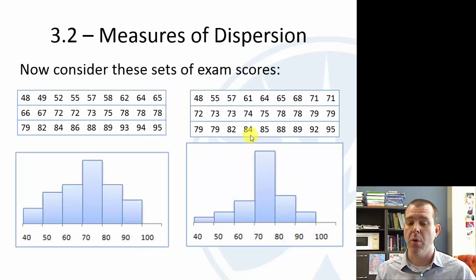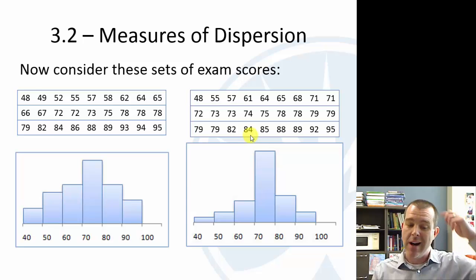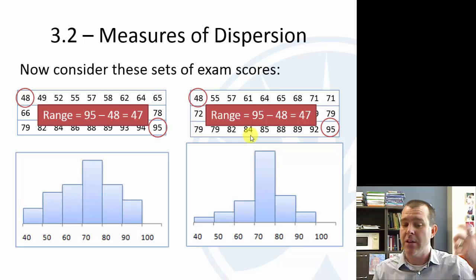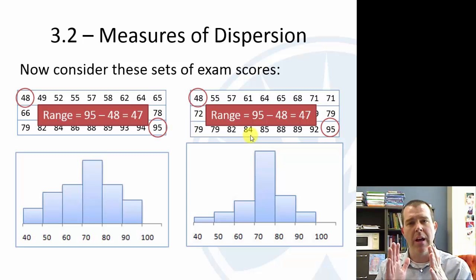Unfortunately, the range doesn't always work. So here's another set of exam scores, two different made-up sets of exam scores. If you look at the range, it's 47 on both of them. But clearly, clearly that second one on the right is more condensed. And so we want to find a way to numerically quantify that somehow. And so we need more than just the range.